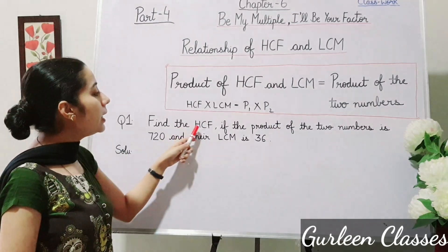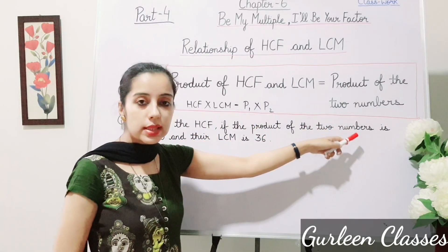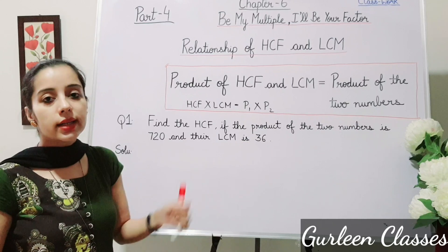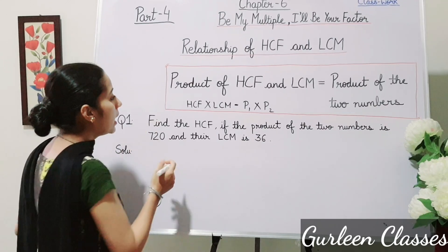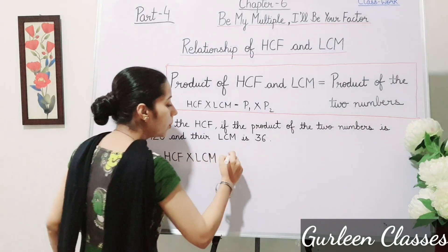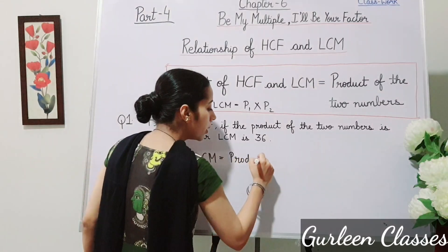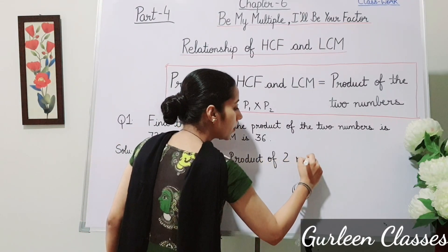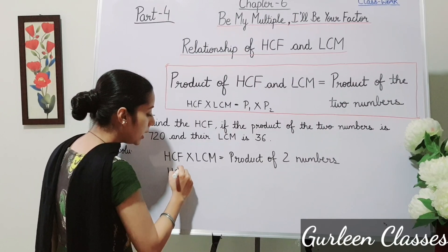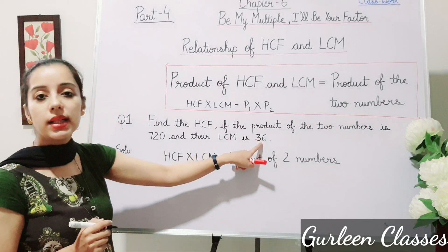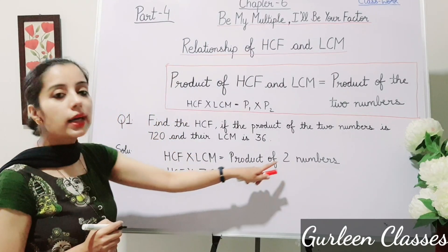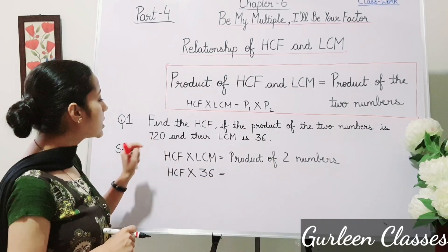Question number 1: Find the HCF if the product of two numbers is 720 and their LCM is 36. So let us use this relationship. We have to find out HCF. HCF into LCM is given as 36, and the product of two numbers is given as 720.